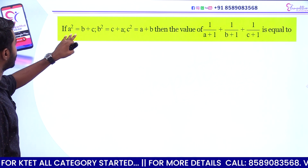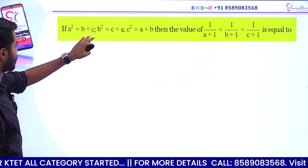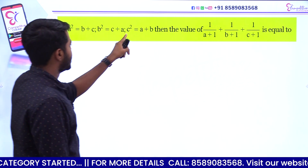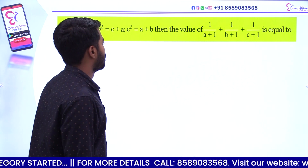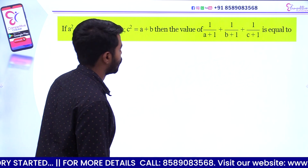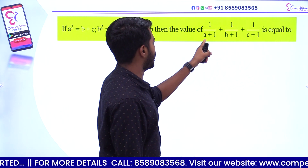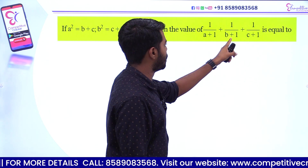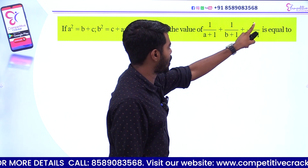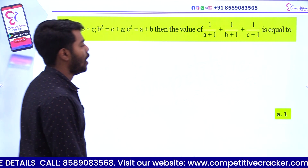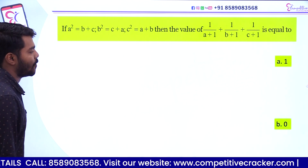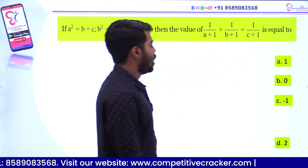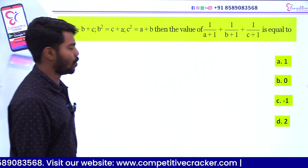If a² equals b plus c, b² equals c plus a, c² equals a plus b, then find the value of 1 by a plus 1 plus 1 by b plus 1 plus 1 by c plus 1. Option A: 1, option B: 0, option C: minus 1, option D: 2.